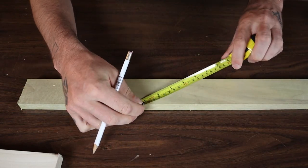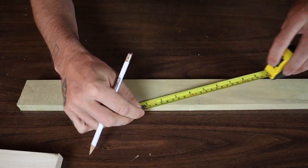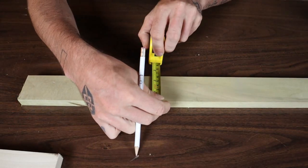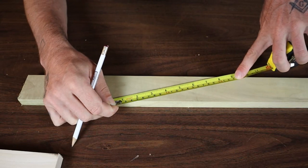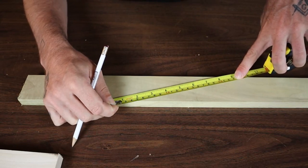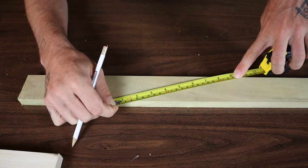And the more you angle the tape, the more accurately it's technically going to be because the more you get away from straight. Like if you went one to eight and marked at four, it would technically be even more accurately centered.